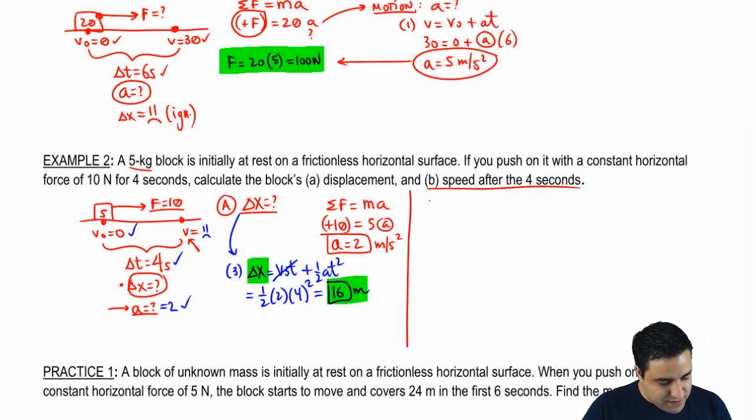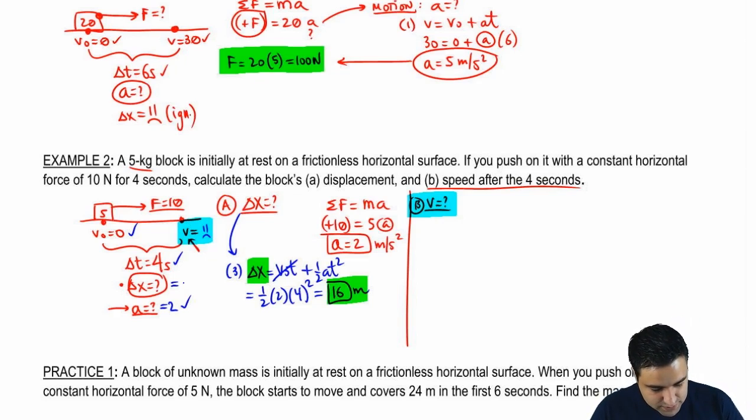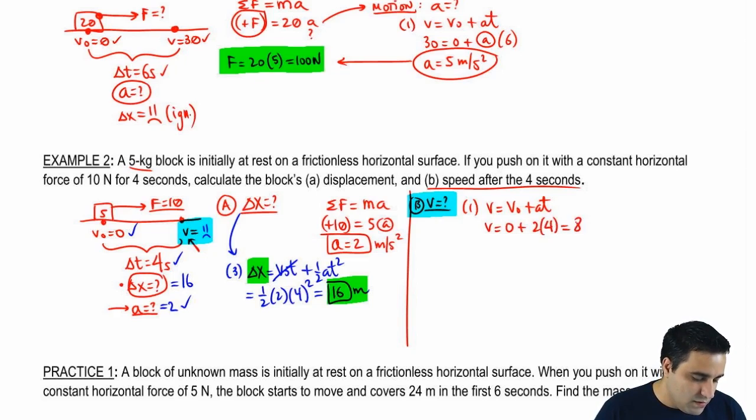All right, for part B, I want to find this final velocity. Part B, final velocity. So part B is this guy right here. And now this is just a motion problem, except that I know four variables. I know that this delta X is 16. So I can just pick whichever equation is easiest. The first equation is easiest. V equals V initial plus AT. V equals 0 plus 2 times 4. This is pretty straightforward. 8 meters per second. Cool.